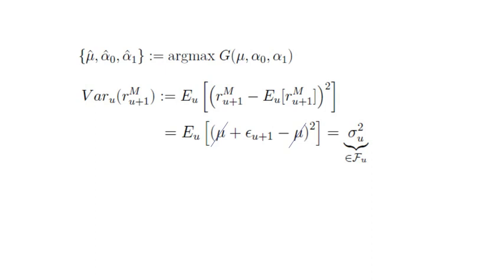Now you plug in the data generating process and you cancel out the μ. Therefore, you see that the conditional variance one step ahead is nothing else than the σ²_U, which itself is measurable as of time U. So that is given because U is the last data point in your training set.